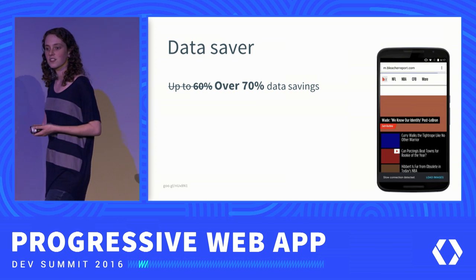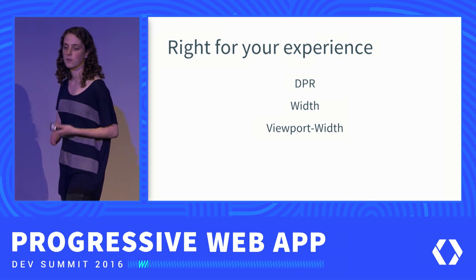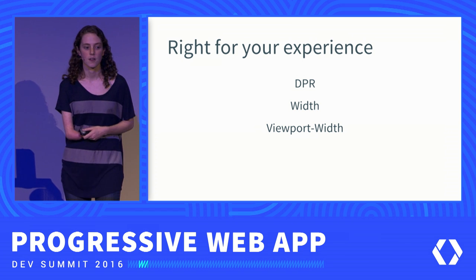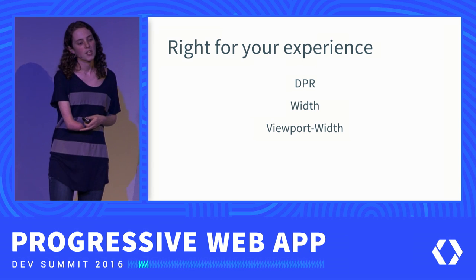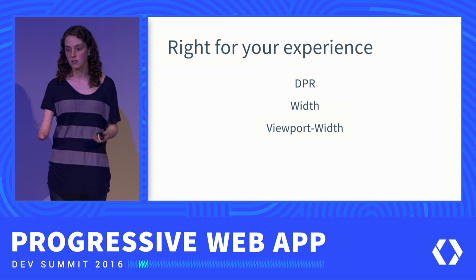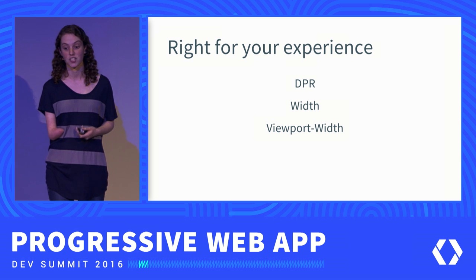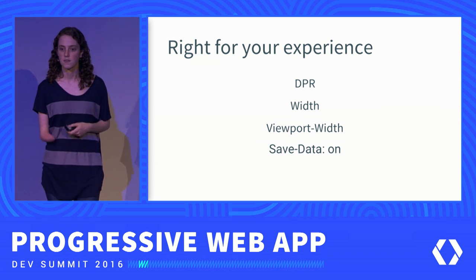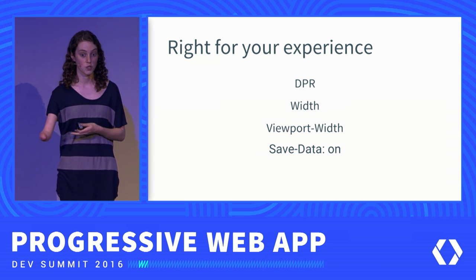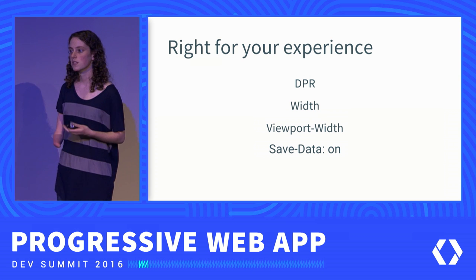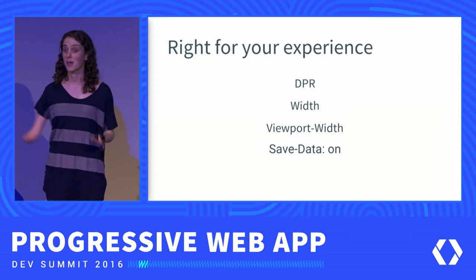There are also a number of client hints that you as a developer can use to optimize the experience based on the device the user has. With DPR width and viewport width, you can make sure that you're only sending the image size that you need to the users, so that they're not incurring data costs for something they may not actually need. We've also launched a Save-Data header, and in Chrome this maps directly to whether the user has the Data Saver feature turned on, which means that you as a developer know which users are the most data sensitive and can adapt your experience accordingly.